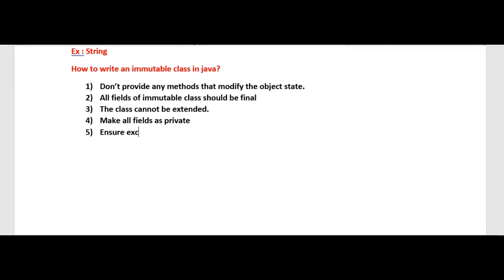The fifth rule is: ensure exclusive access to any mutable components. If your class has any fields that refer to a mutable object, ensure that clients of the class cannot obtain a reference to that mutable object. These are the five important rules to write an immutable class in Java.